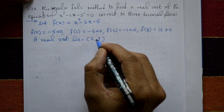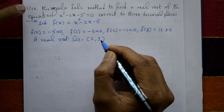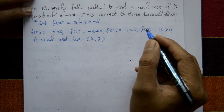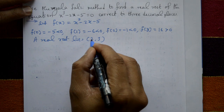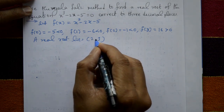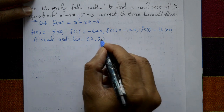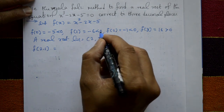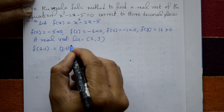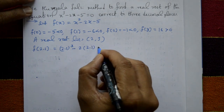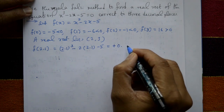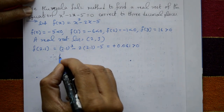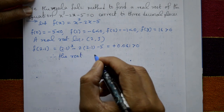The root lies in the interval 2 to 3. We need values close to 0 — one less than 0 and one greater than 0. Taking the difference, from 2 to 3, we evaluate at 2.1. Put x equal to 2.1: 2.1 cubed minus 2 into 2.1 minus 5.